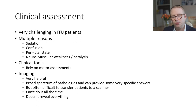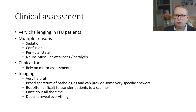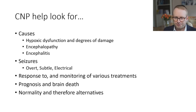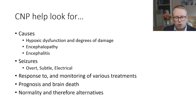Imaging is very helpful — you can see a very broad spectrum of pathologies and it can provide lots of very specific answers. But it's often very difficult to transfer patients to a scanner; you can't do this all of the time and it takes a lot of planning and preparation, and it doesn't reveal absolutely everything. We can help look for certain types of causes, for example hypoxic dysfunction and degrees of brain damage. We can look for signs of brain dysfunction, encephalopathy, and we can even sometimes see encephalitis which are invisible to the MRI scan.